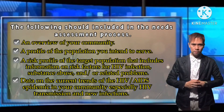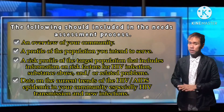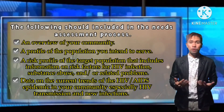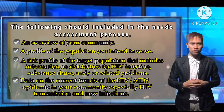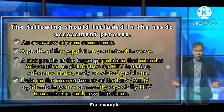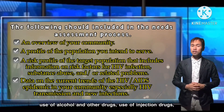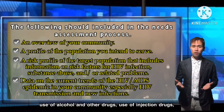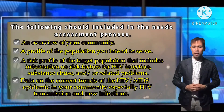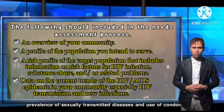And next, data on the current trends of the HIV or AIDS epidemic in your community, especially HIV transmission and new HIV infections. For example, local data on relevant risk behaviors, such as use of alcohol and other drugs, use of injection drugs, prevalence of sexually transmitted diseases, and use of condoms.